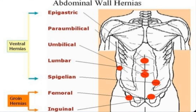For abdominal wall hernias, the common ones in the anterior abdominal wall are epigastric, paraumbilical, umbilical, lumbar, and spigelian hernias — spigelian being very rare. For groin hernias, the common ones are inguinal and femoral.